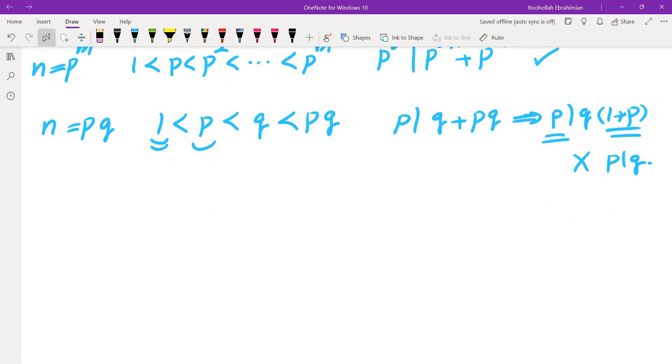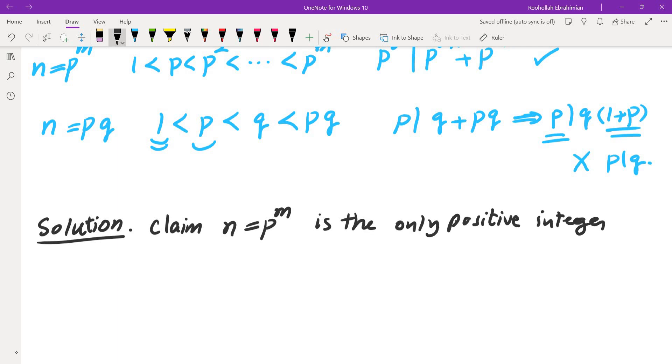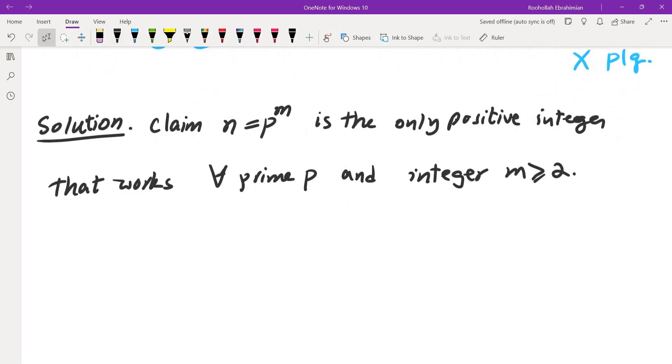Next what I did was I basically came up with the solution at that point. So let's try that. In order to get to a solution, I will have to usually look at the extreme cases, either the very smallest possible divisors or the very largest possible divisors. So the claim is n equals p to the power of m is the only positive integer that works for every prime p and integer m at least 2. First of all, we showed that p to the power of m works. Now we are going to show nothing else works.